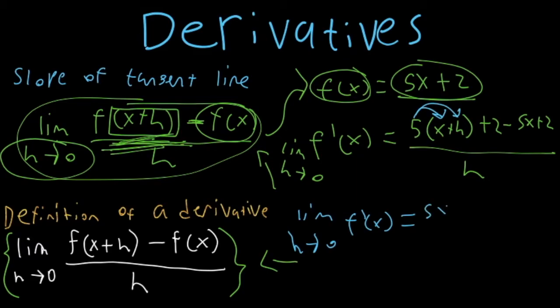So let's take this 5 and let's distribute it into here. So we're going to have 5x plus 5h plus 2 minus 5x plus 2.